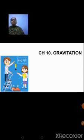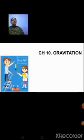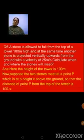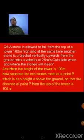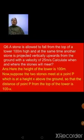Today I have taken up only one sum because it's quite lengthy and I want you all to pay proper attention. Now, Question 6: A stone is allowed to fall from the top of a tower 100 meters high, and at the same time another stone is projected vertically upwards from the ground with a velocity of 25 meter per second. Calculate when and where the stones will meet.